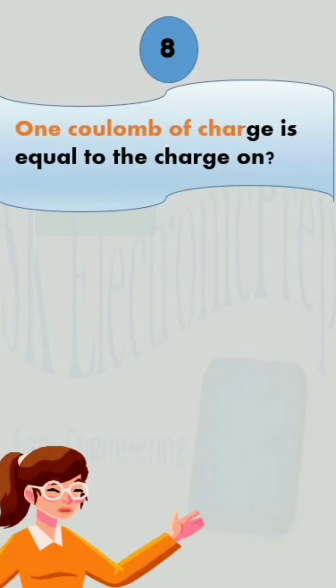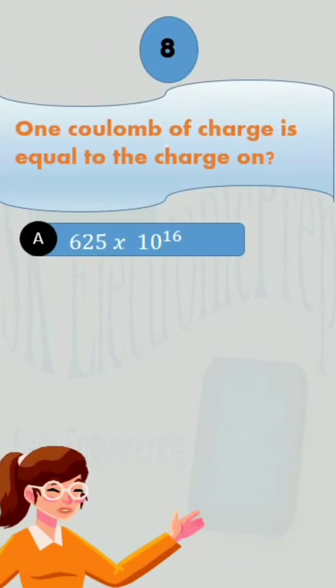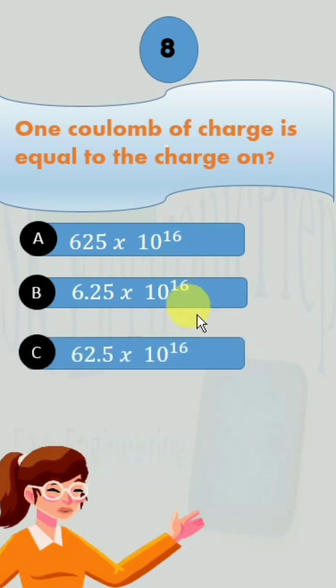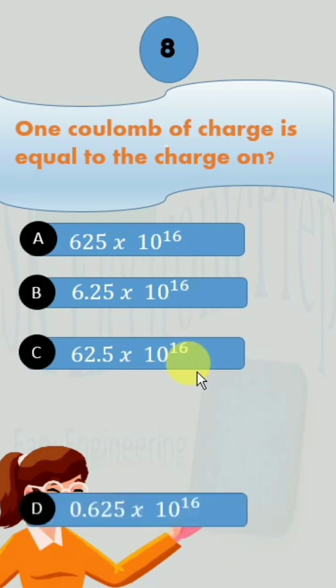1 coulomb of charge is equal to the charge on option A, 625 x 10 raised to the power 16, option B, 6.25 x 10 raised to the power 16, option C, 62.5 x 10 raised to the power 16